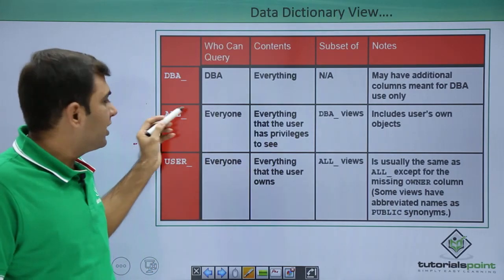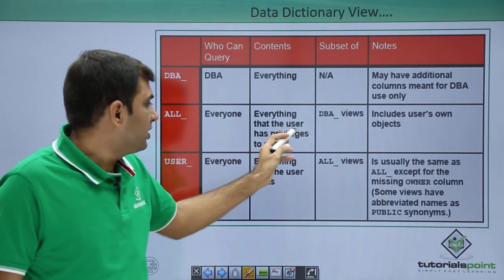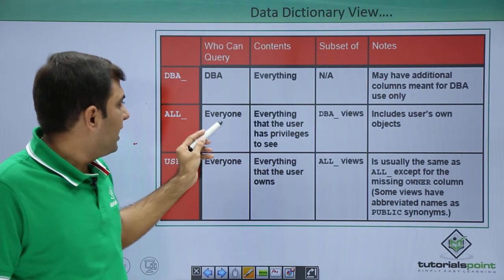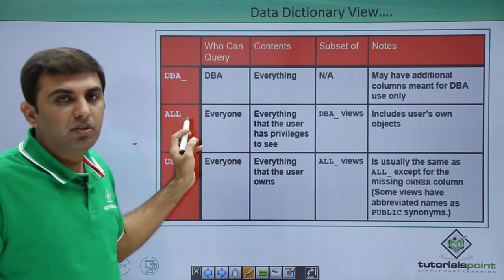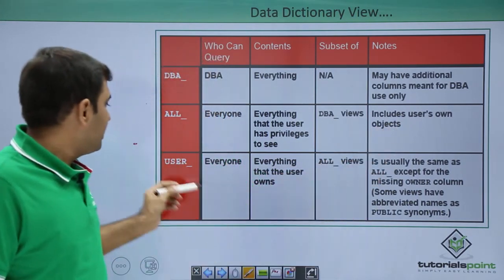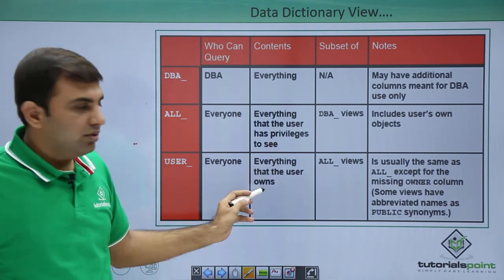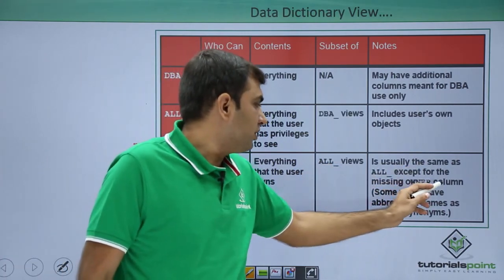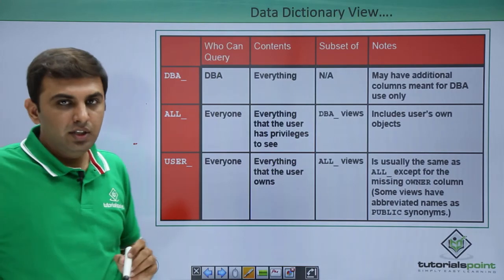The all_ view can be queried by everyone, and it contains everything that the user has privilege to see — that is the key difference. The user_ view can also be queried by everyone but contains only what the user owns. The user_ view is a subset of the all_ view and is usually the same as all_ except for the missing owner column, and some views have an abbreviated name as a public synonym.